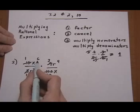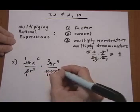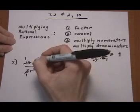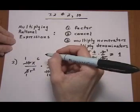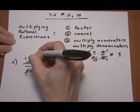X and X to the 6th both contain an X. So if I divide off this X I get a 1. Cancel off 1 X here, I get an X to the 5th.